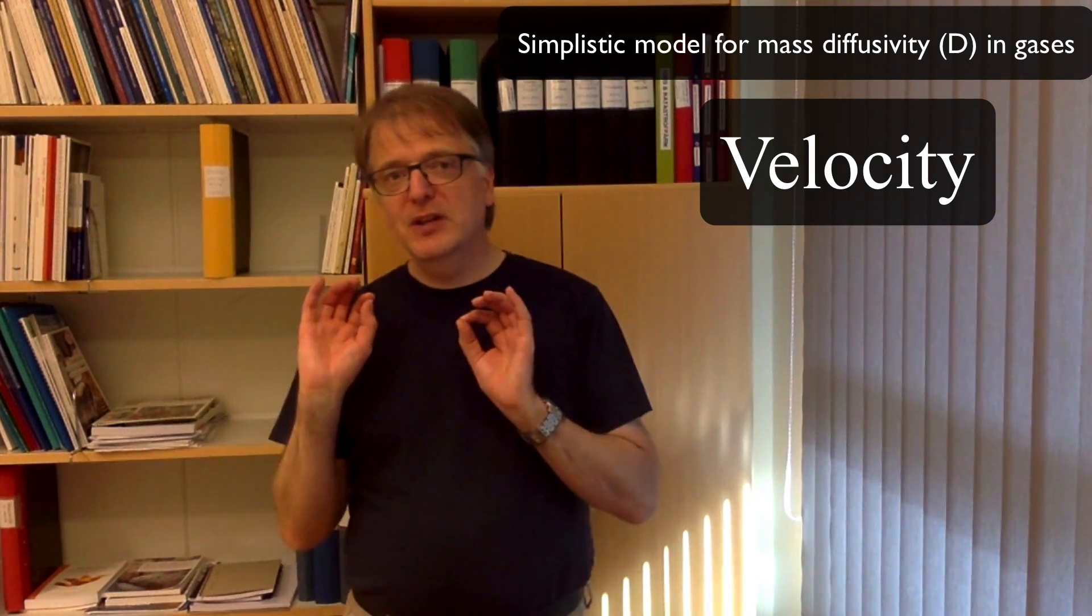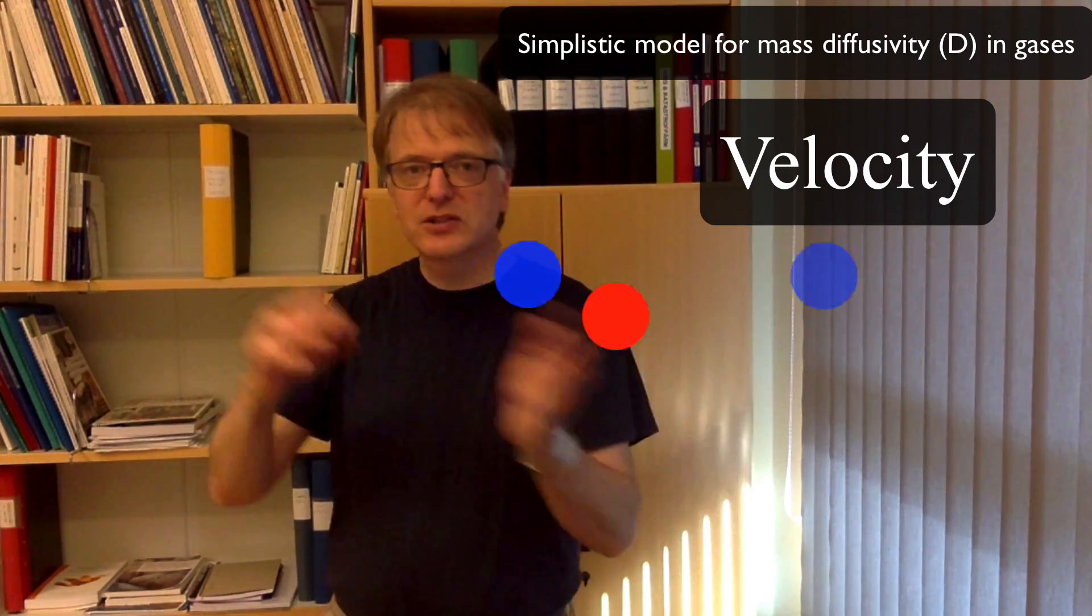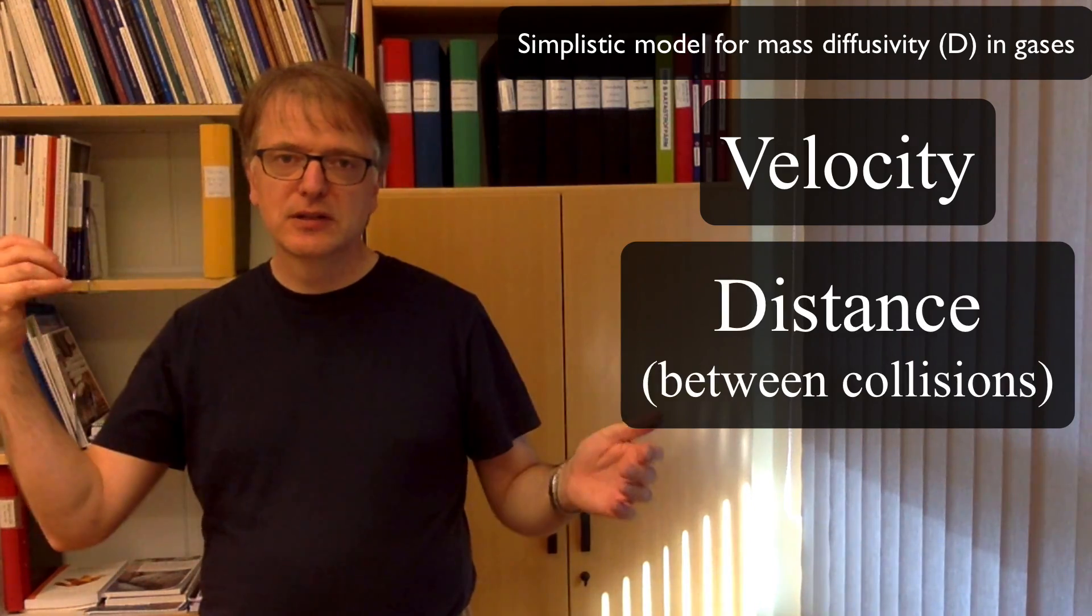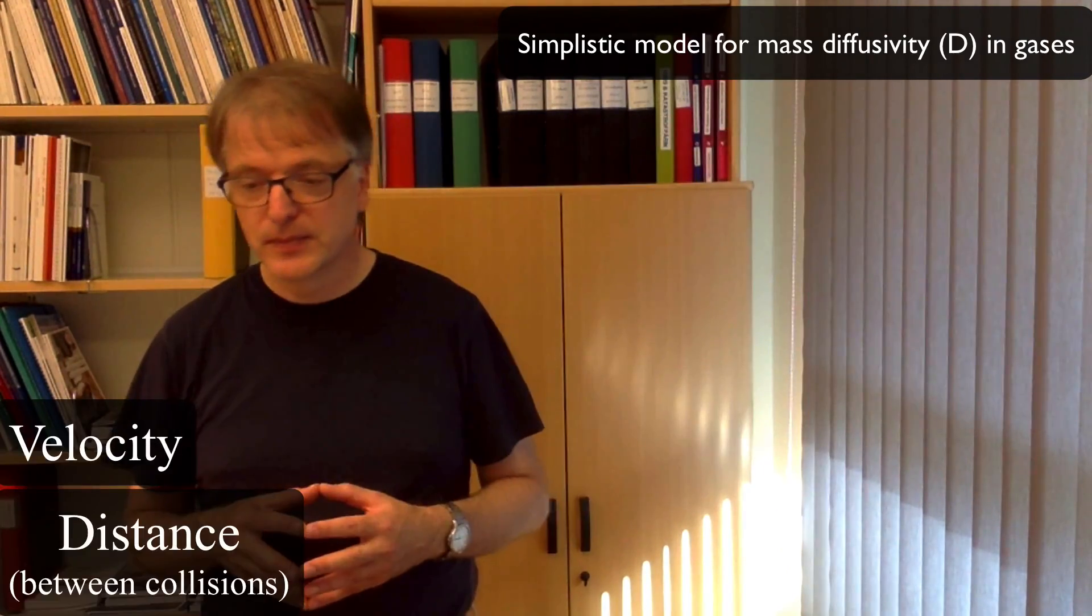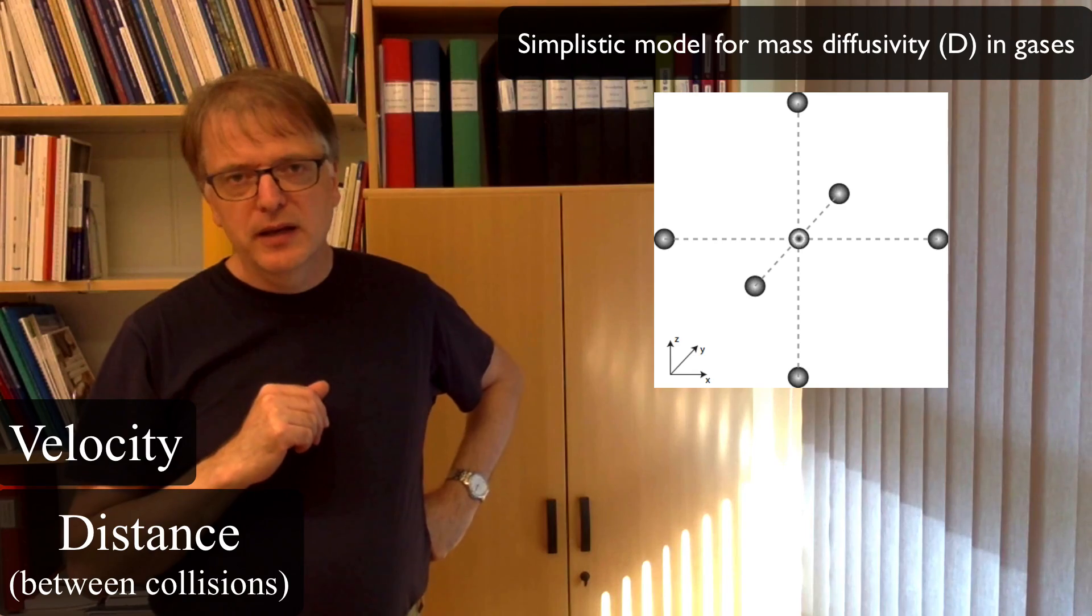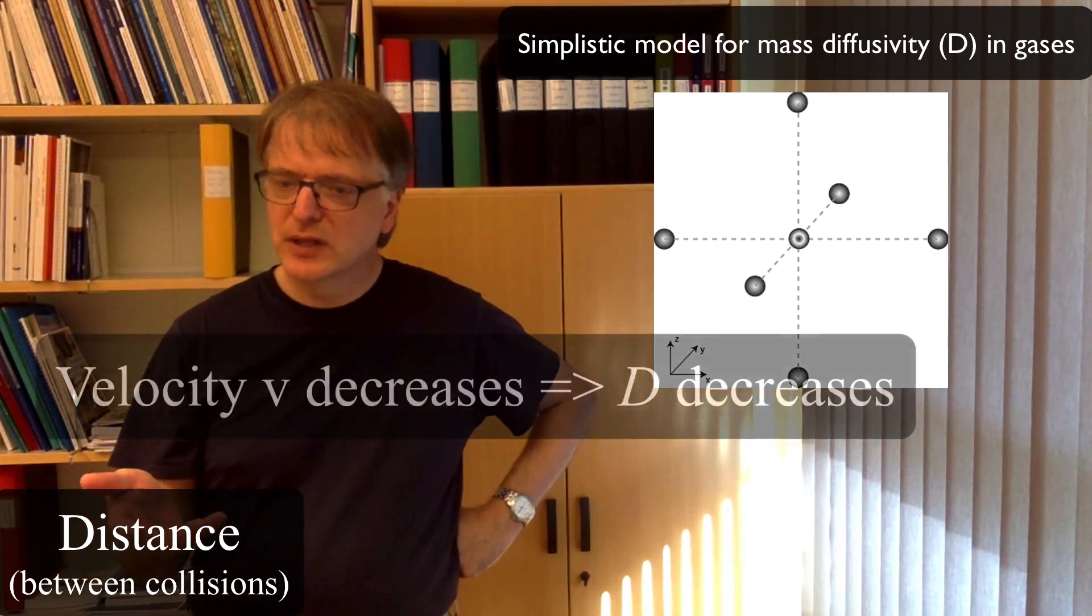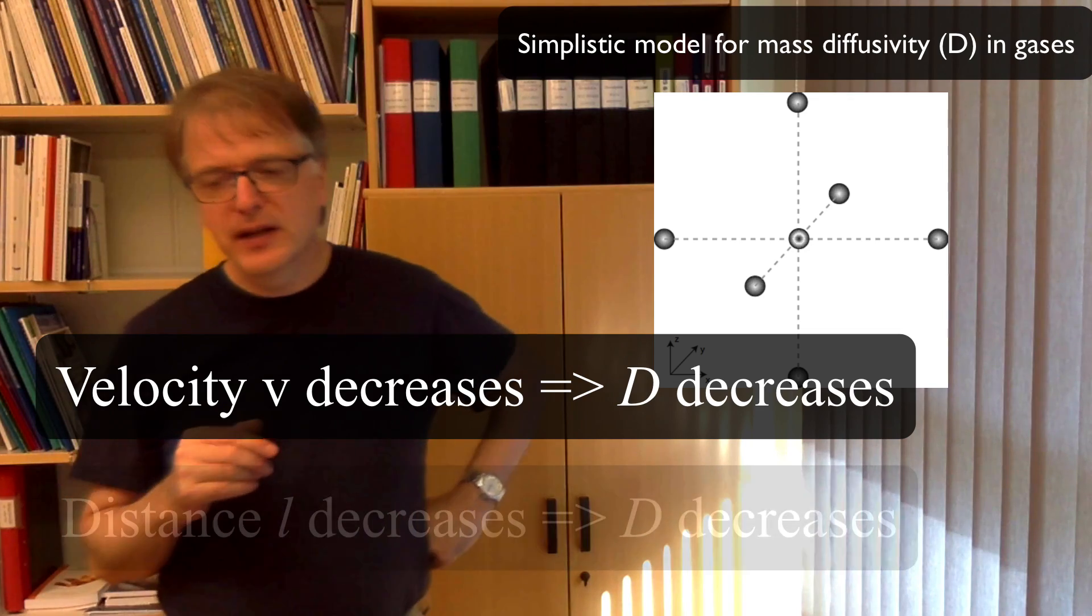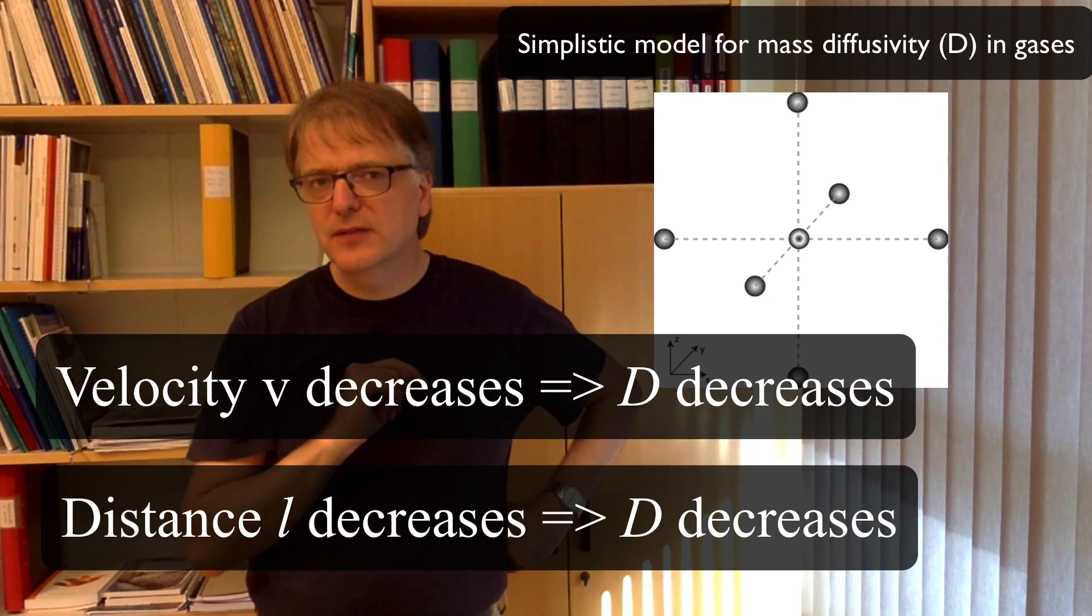But even if the molecule is moving fast it eventually collides with other molecules and then changes direction. So the distance between collisions will also determine the diffusivity. So how to do that? Well, we have our simple discrete universe here and if the velocity decreases then the diffusivity should decrease. If the distance between collisions, we will call that L here, if that decreases then the diffusivity should decrease as well and the molecule can move in six different directions.